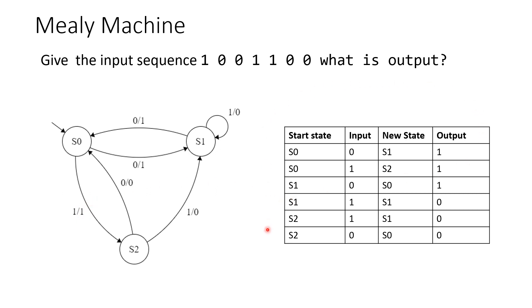Our state transition table is also slightly modified from a finite state machine in that we have both an input and an output column. And of course, as before with a finite state machine, we have the start state and the new state.